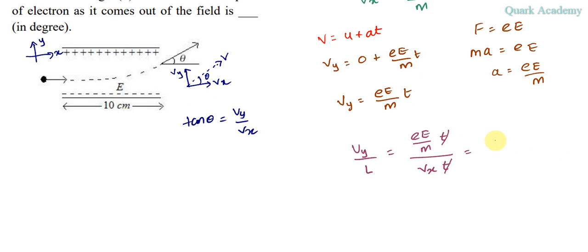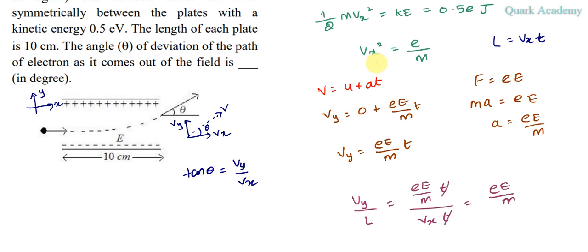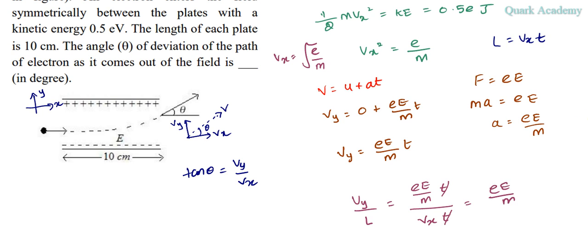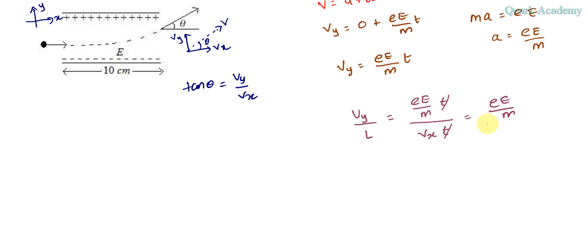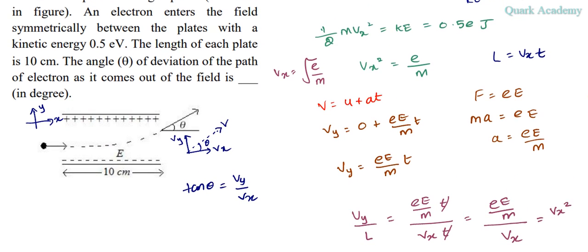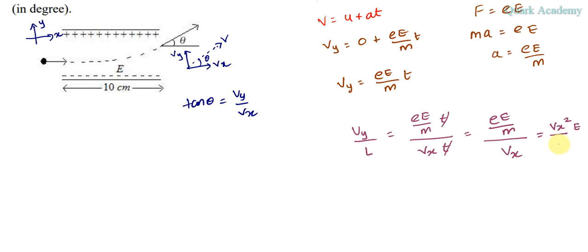VY by L becomes eE by M times T divided by VX times T. The time gets cancelled, and this becomes eE by M divided by VX.